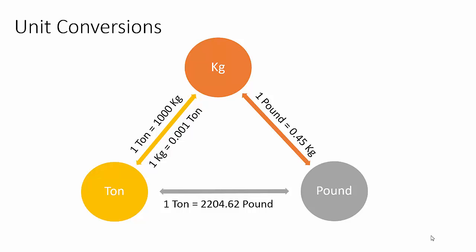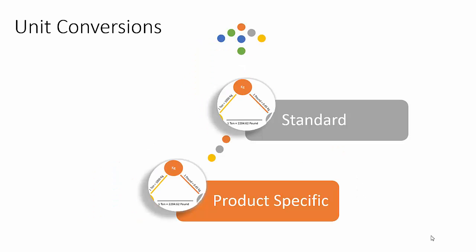If different units of measurement are associated with a product, a unit conversion from one unit to another must exist. When a conversion is set from one unit to another, you must also create the conversion the opposite way. For example, 1 ton is equal to 1000 kg, and 1 kg is equal to 0.001 ton. You can set up standard conversion rules or product-specific conversion rules.